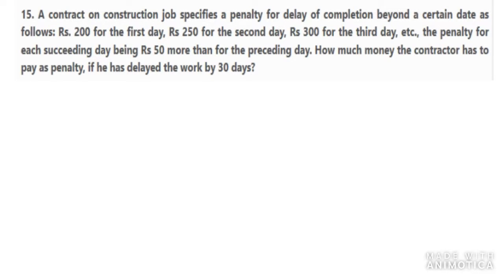Let's start with question number 15 of exercise 5.3. A contract on construction job specifies a penalty for delay of completion beyond a certain date as follows: Rs. 200 for the first day, 250 for the second, 300 for the third day, and so on, the penalty for each succeeding day being 50 more than for the preceding day.